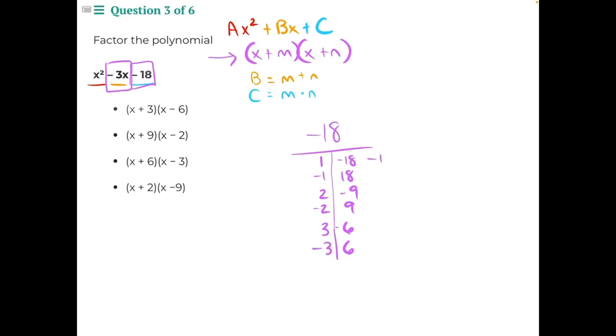1 and negative 18 would be negative 17, so it's not that one. This would be positive 17, so it's not that one. This would be negative 7 and positive 7, both incorrect. This would be negative 3 and positive 3. This is incorrect, but this one, negative 3 matches our b value. So this is the pairing of numbers we will use to create our binomial.